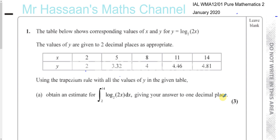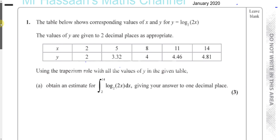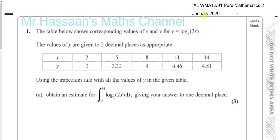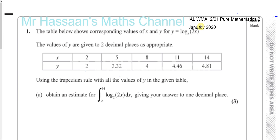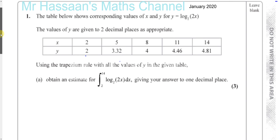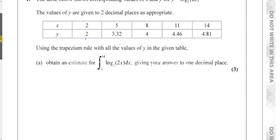Welcome back. Here we have a question from P2, Pure Mathematics 2 International A Level. This is from the January 2020 paper. Part A is about the Trapezium Rule, and part B is a new style of question which occurs in the new P2 papers, normally part B of the Trapezium Rule type question. So let's start with part A.